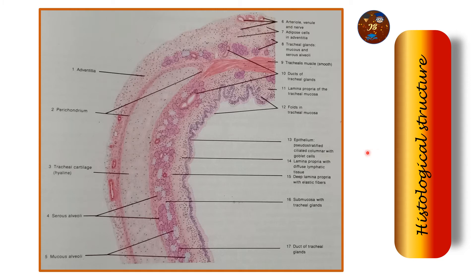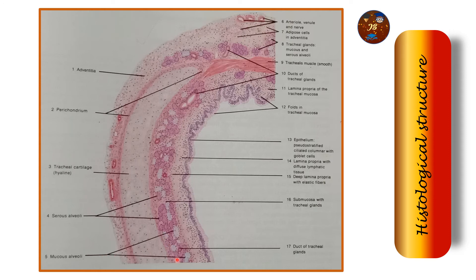Regarding the histological structure or the transverse section, the main identifying character is the tracheal cartilage, also known as hyaline cartilage. This is very important because it appears as a ring-like, U-shaped structure. Next comes the epithelium — it is pseudo-stratified ciliated columnar epithelium with goblet cells, which is another very important identifying character. You can also see the tracheal glands, the muscles of the trachea, and the ducts of the tracheal glands, as well as mucous alveoli and serous alveoli.